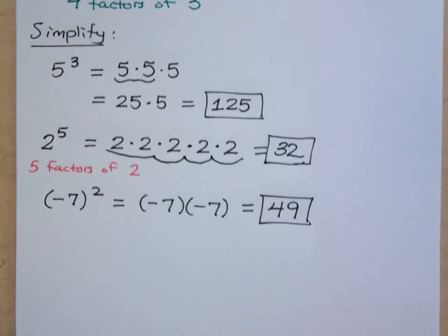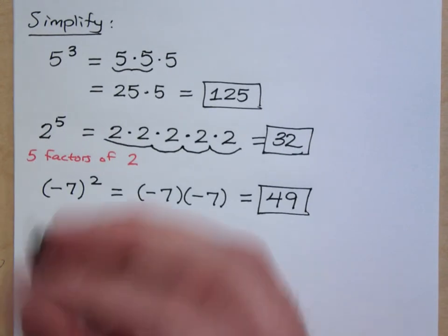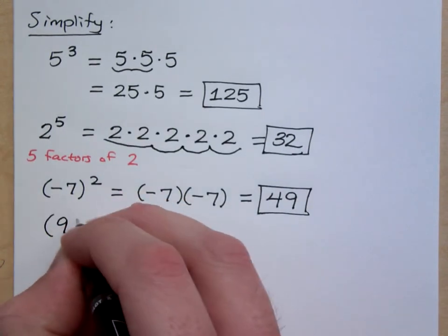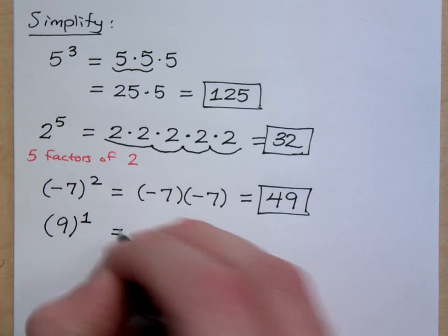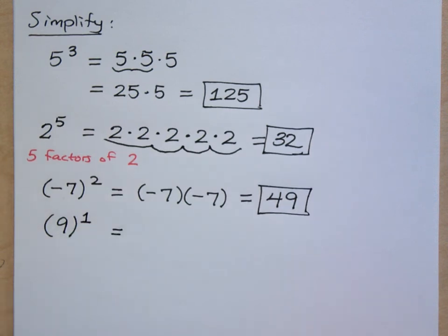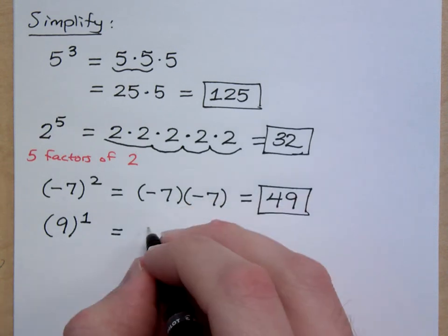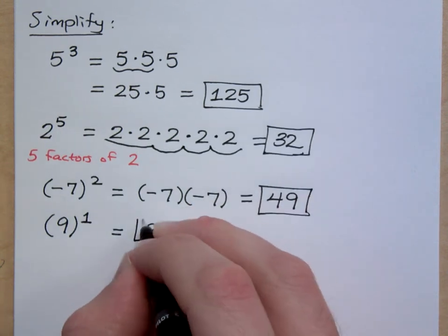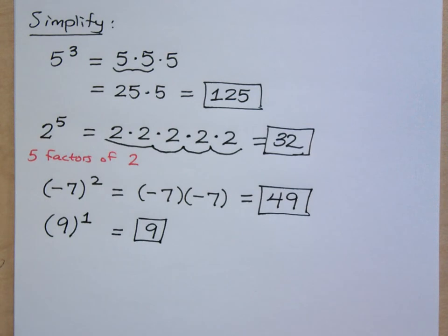So far so good? Okay, what is 9 to the first power? You have one factor of 9. That means all you have is 9. That's kind of boring. Let's make it more exciting.